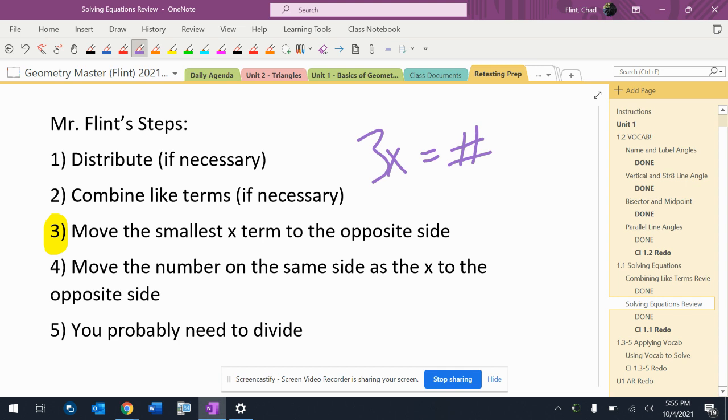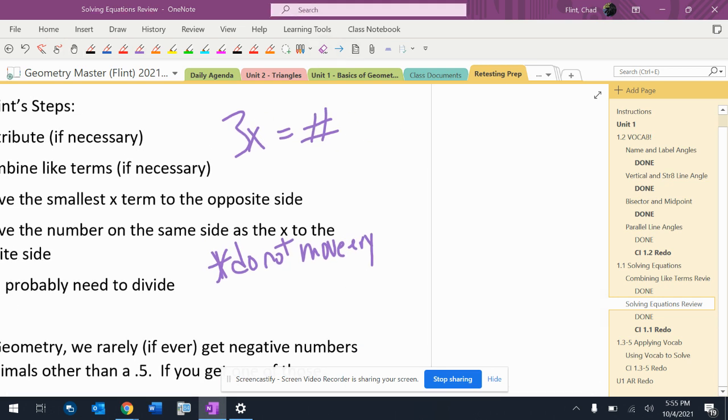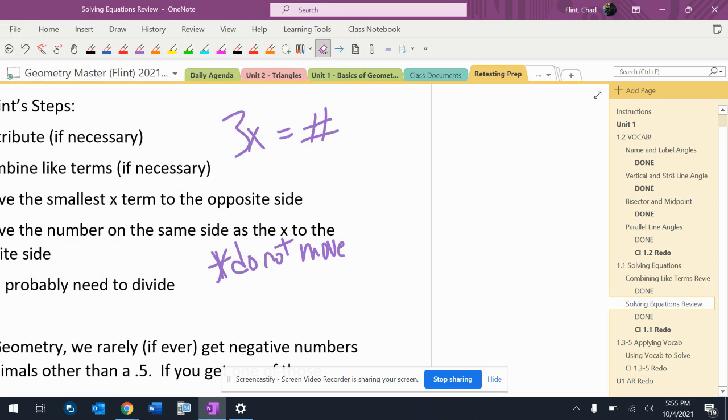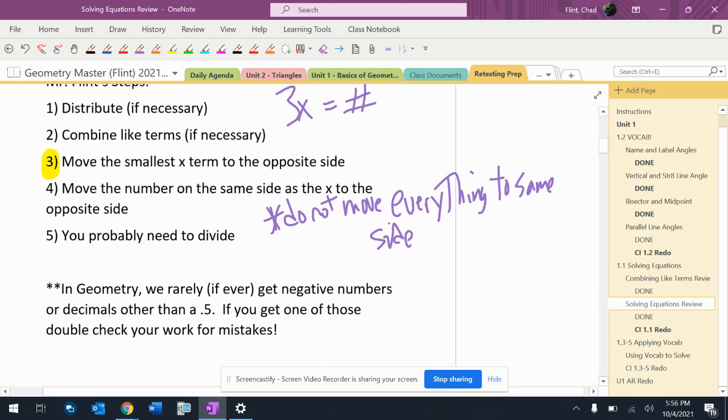You cannot move everything to the same side. So I'm going to put down, do not move everything. Let me actually spell everything correctly here. Hit the wrong button. There we go. Do not move everything to the same side. Okay, that is a disaster. The equals disappears and then bad things happen.